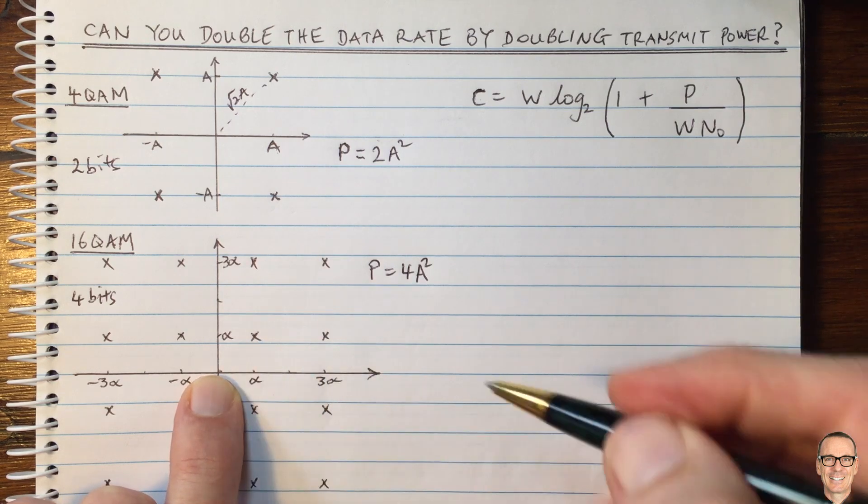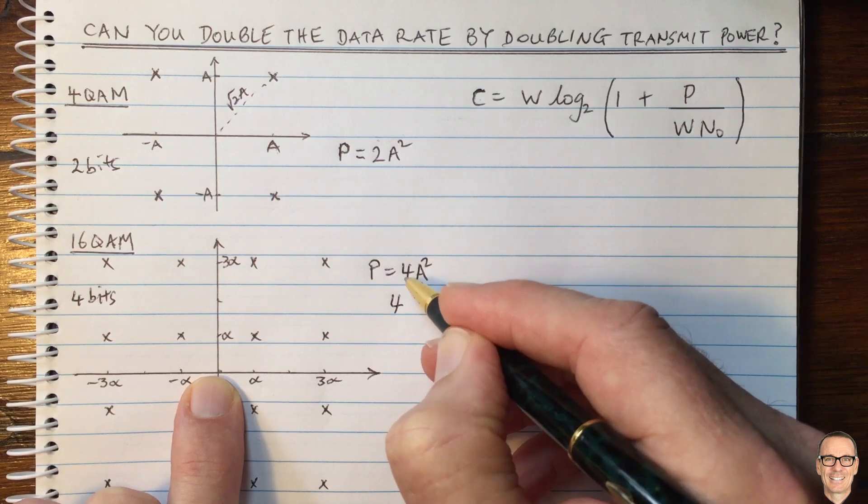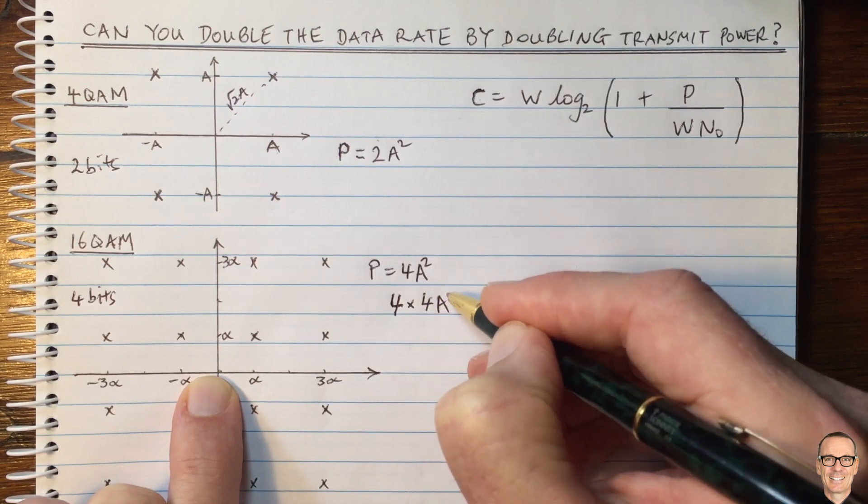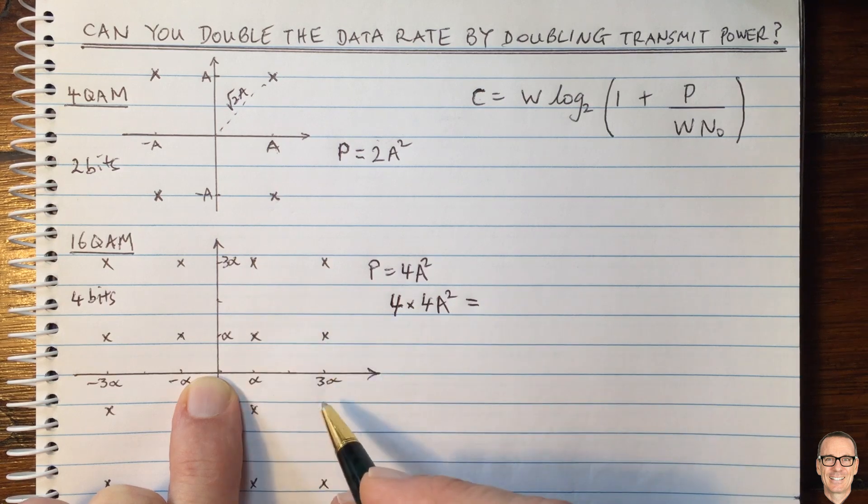Let's just find the total power across those. That's going to be four times four a squared. That's what it's going to equal. And then we find that out by adding up the powers for each one.